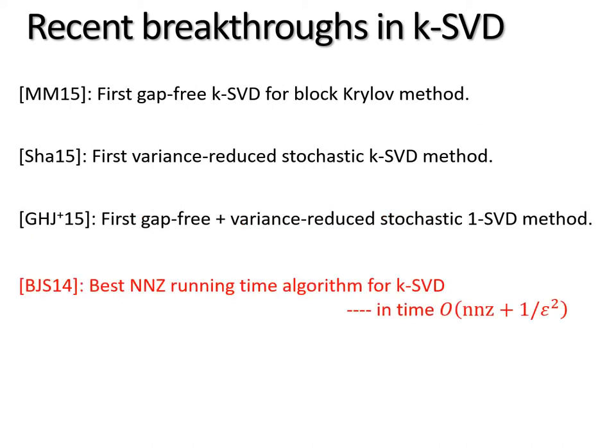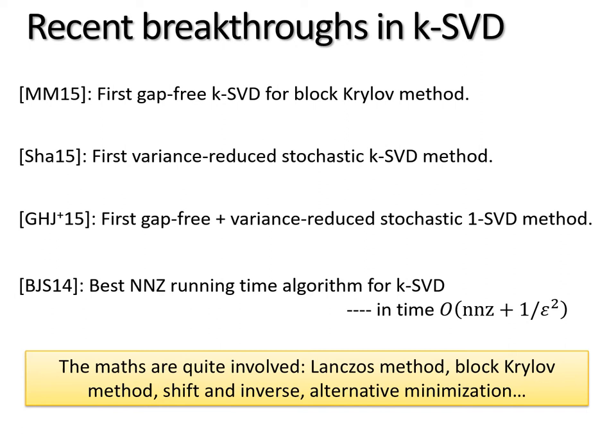And in addition, Bojanapali, Jane, and Shagavi gave a kSVD algorithm with a running time that's only linear in the number of non-zeros of the input matrix, and then plus some 1 over epsilon square error term. So for those of you who maybe have seen those papers, you may immediately realize that the math there are very involved. They use even different methods, Lanczos or Block Krylov for shift and inverse alternative minimization. But is it really necessary?